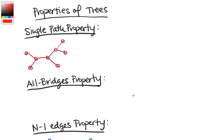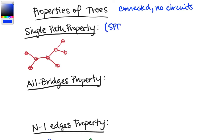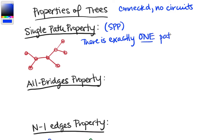Now let's talk about some properties of trees. A tree is connected and has no circuits. The first property is the single path property, abbreviated SPP, which means there is exactly one path between each pair of vertices.